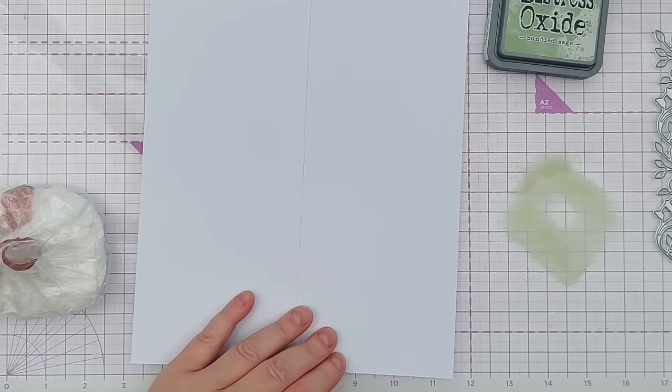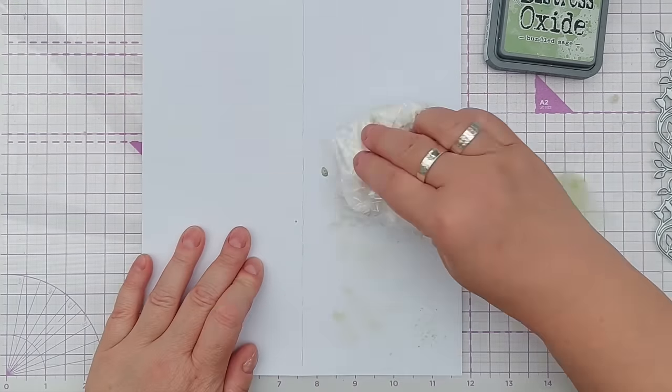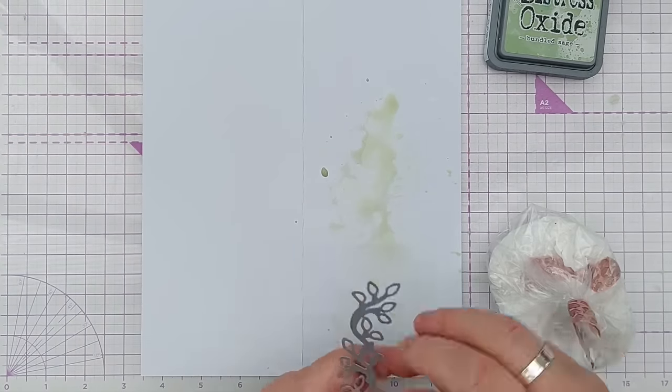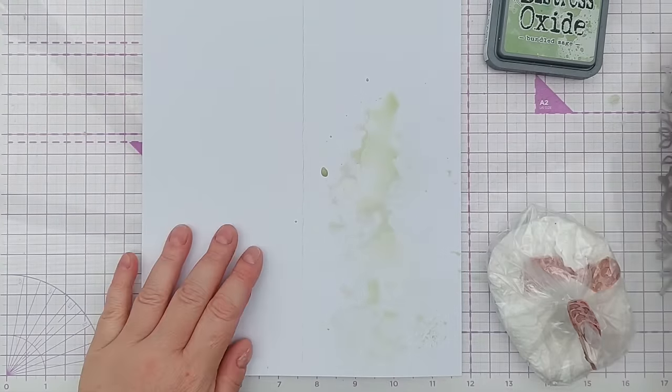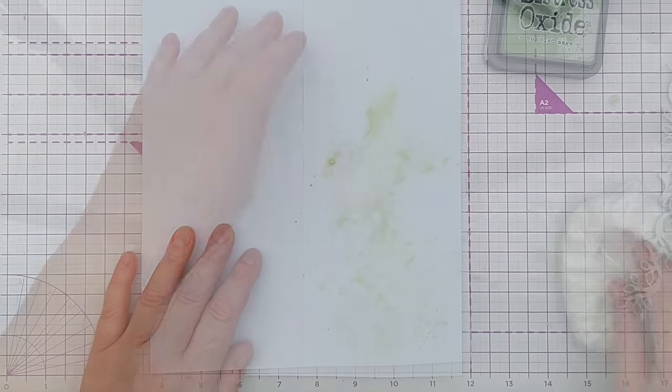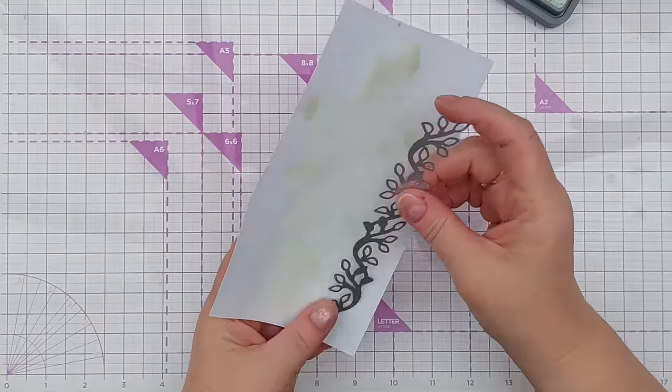So I'm just smushing on a bit of Bundled Sage. I don't want too much, just enough to show up and to cut from. So I'll dry that with my hairdryer. So I do want a little bit of white on there still.